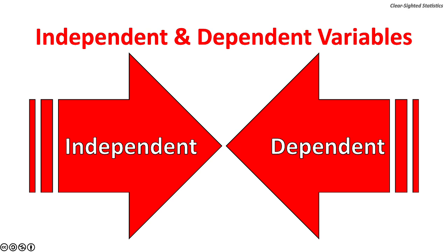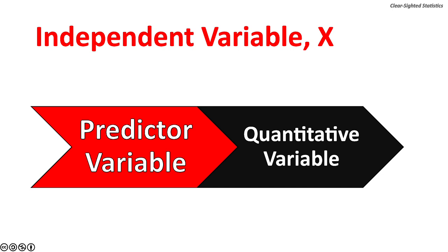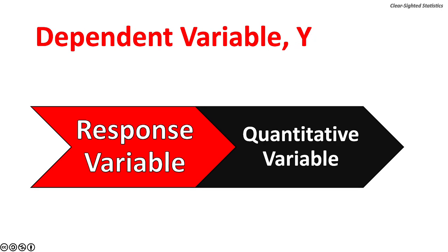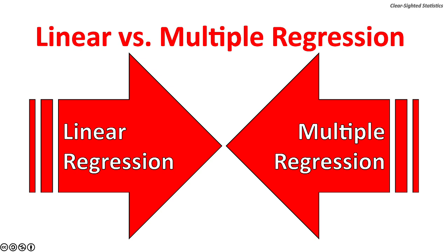The independent variable, or X, is the predictor variable. Independent variables are quantitative variables. The dependent variable, or Y, is the response variable — it responds to changes in the independent variable. Dependent variables are also quantitative variables.